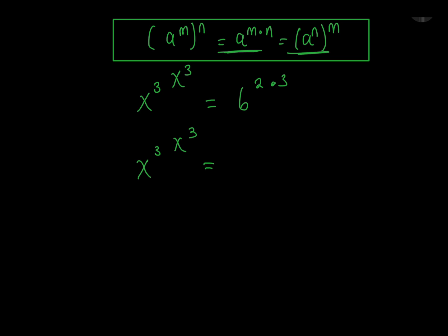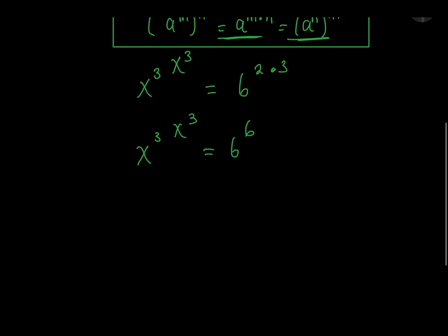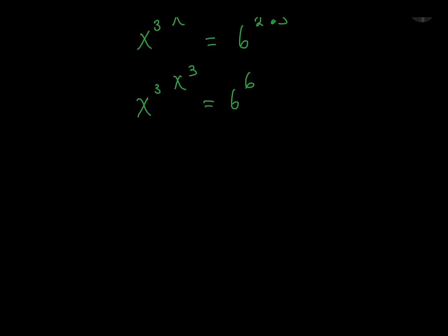So we know that 2 times 3 is just 6. Because this is equal to this, this should be equal to this.